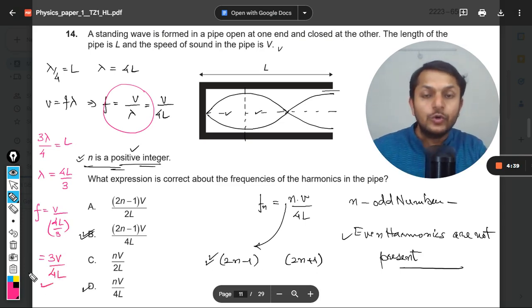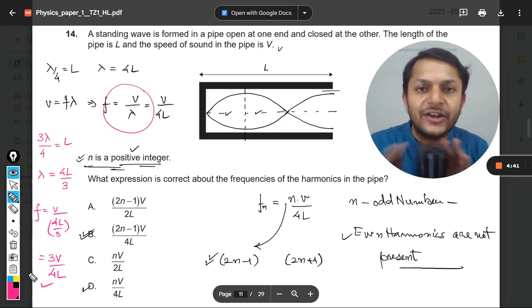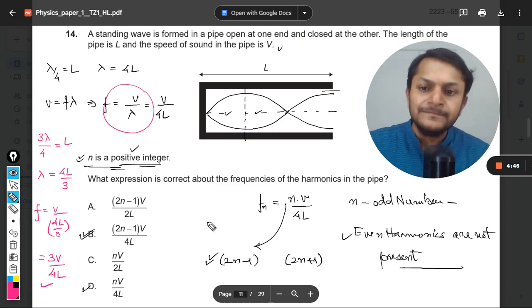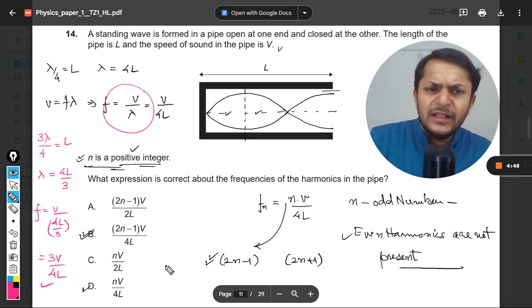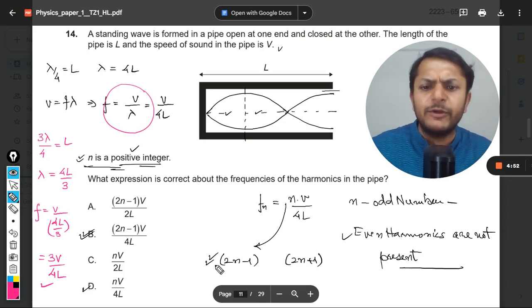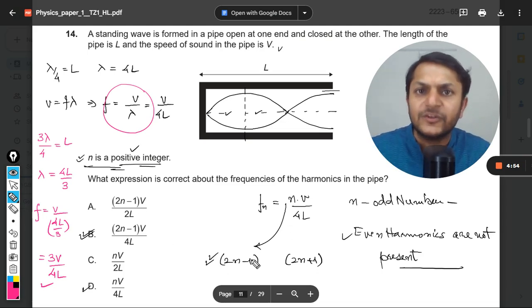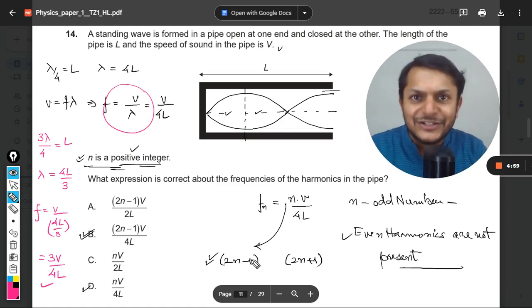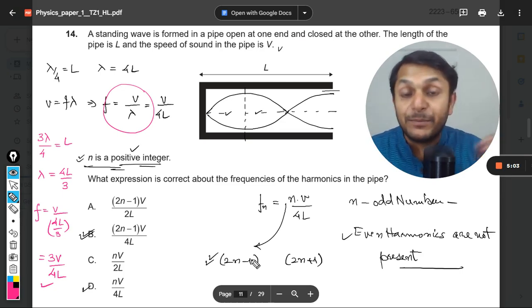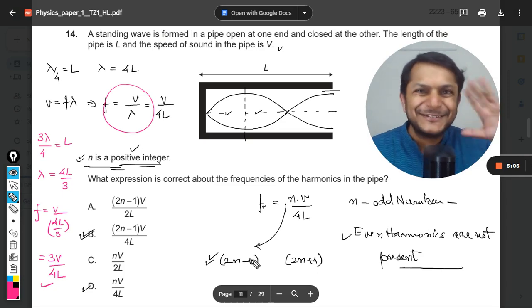Clearly I have shown you that even harmonics are not present in such a case. Only the odd harmonics will be there. And that is why it becomes clear that we would be replacing N with 2N minus 1. So my dear students, this is how we do this question. Thanks for joining. This is Professor Varun. Please join the YouTube channel if you want to access the paper two question solutions. All the best. Bye.